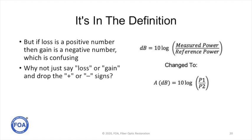So if you have an OTDR or an optical loss test set that doesn't measure power but just measures loss, you can use this equation and define it as loss as a positive number. But if loss is a positive number, that makes gain a negative number, which is confusing. Why not just say loss or gain? Put that in the display. Or make losses red and gains blue. That must have been a better solution than changing the whole equation.